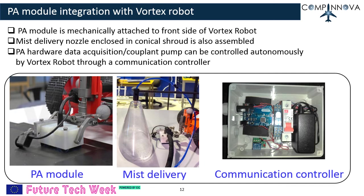PA module integration with the Vortex robot: the developed PA module is mechanically attached to the front side of the Vortex robot as shown in the first picture. The mist delivery nozzle, enclosed in a conical shroud, is also assembled with the robot as shown in the second picture. The PA hardware data acquisition and couplant pump switch on and off can be controlled autonomously by the Vortex robot through a communication controller, shown in the third picture.